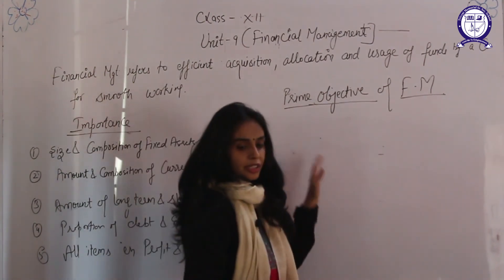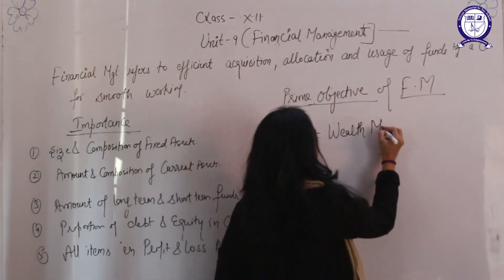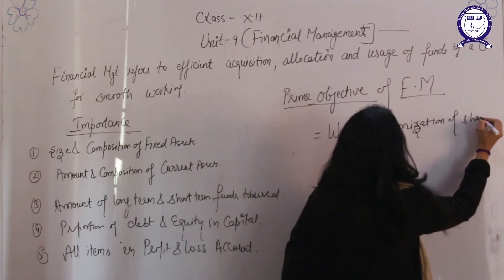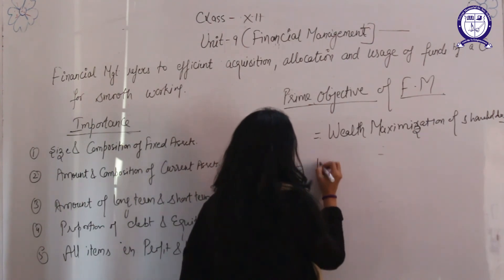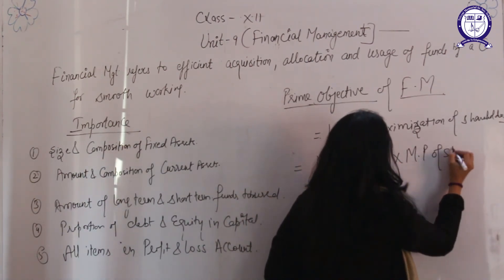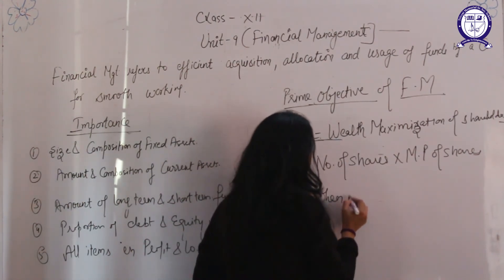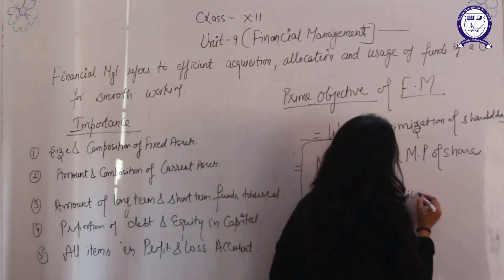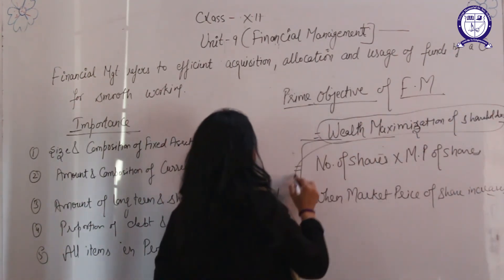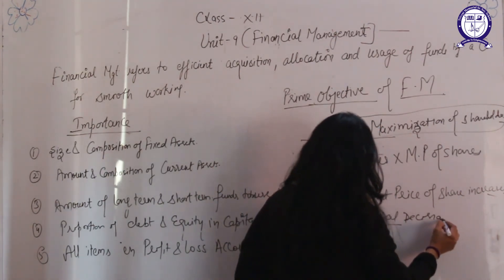The prime objective of financial management is the wealth maximization of shareholders. It is calculated as: number of shares multiplied by the market price per share. When the market price increases, the wealth of the shareholders increases. To achieve this objective, the three financial decisions — investment, financing, and dividend decisions — must be taken wisely and carefully.